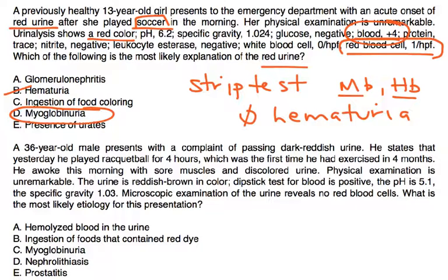Next, a 36-year-old male presents with a complaint of passing dark reddish urine. He states that yesterday he played racquetball for four hours, which was the first time he had exercised in four months. He awoke this morning with sore muscles and discolored urine. Physical exam is unremarkable. The urine is reddish brown in color.